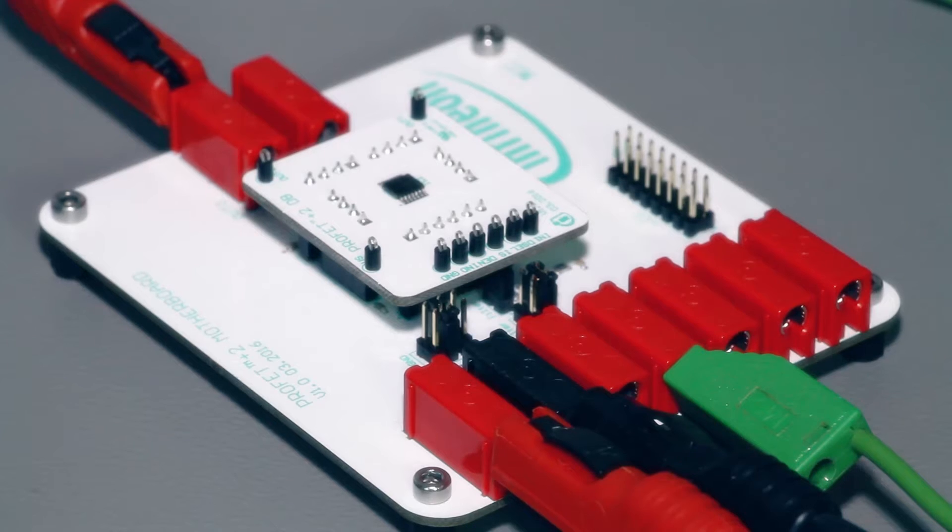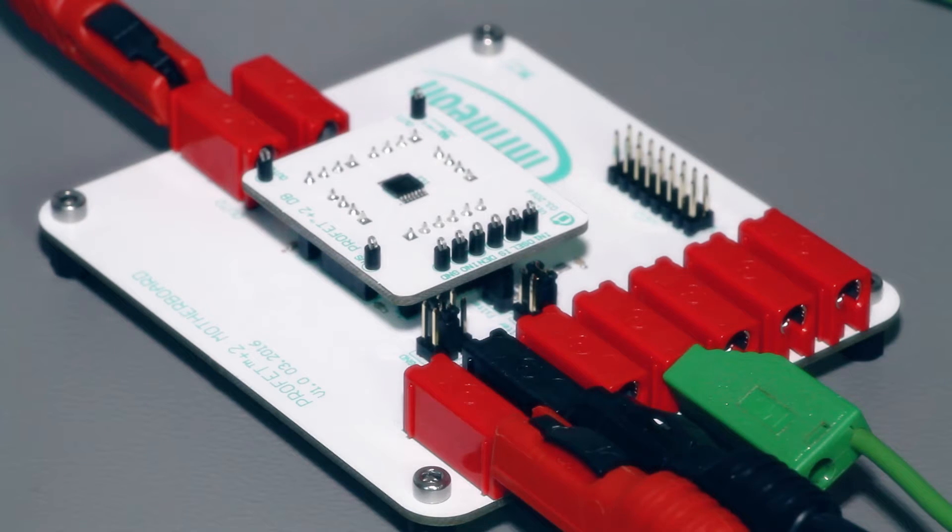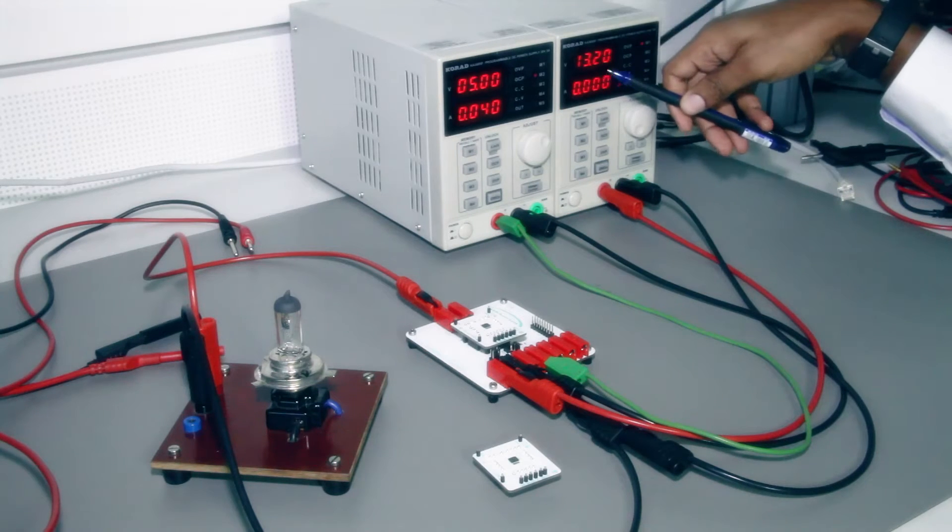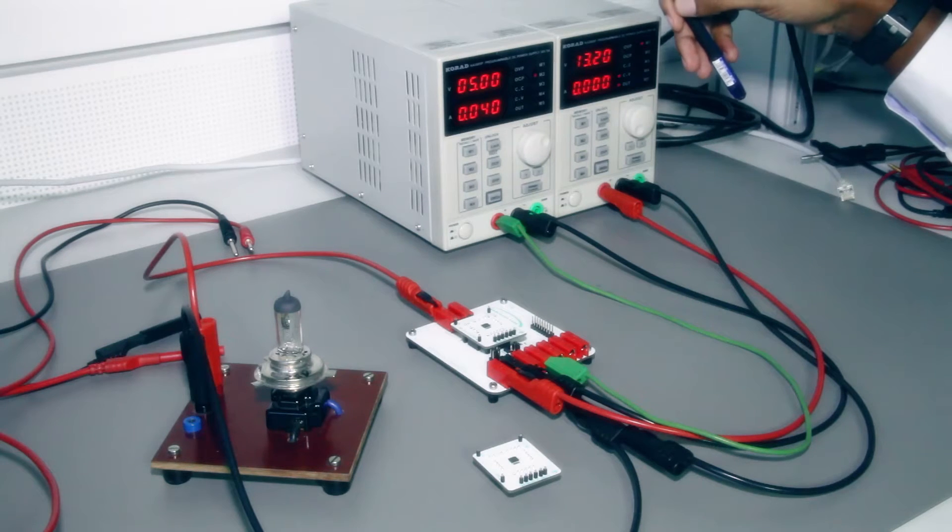On this daughterboard we have the BTS7008-2EPA, and here we've connected to a standard 12 volt board net. You can see here it's around 13.2 volts on the board net.